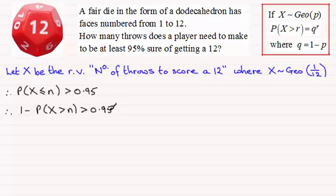If I rearrange this, let's add this probability to both sides and subtract 0.95 from both sides. So therefore, 1 minus 0.95 is 0.05, and that's going to be greater than the probability of X being greater than n.